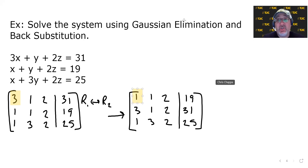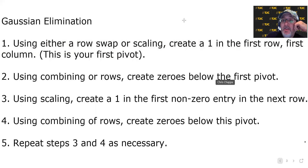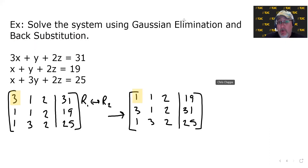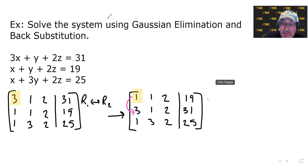Now that we've got the 1 as the first pivot in row one, column one, we're going to use that 1 to eliminate everything below it. What could we do to eliminate the 3 underneath that 1? If we multiplied that 1 by negative 3, it would set up opposites and cancel the 3 below it. So we're going to do negative 3 times the first row and add it into the second row.